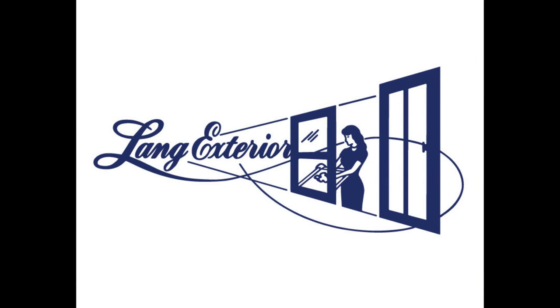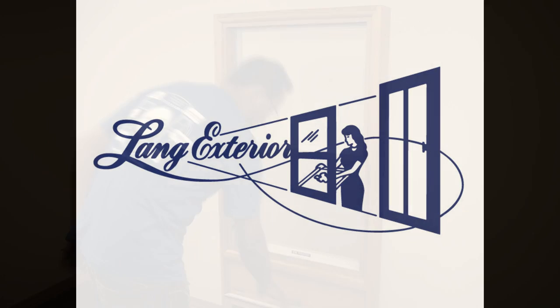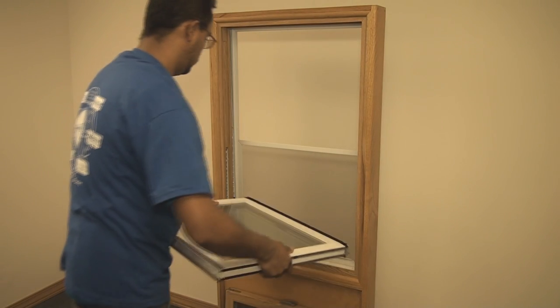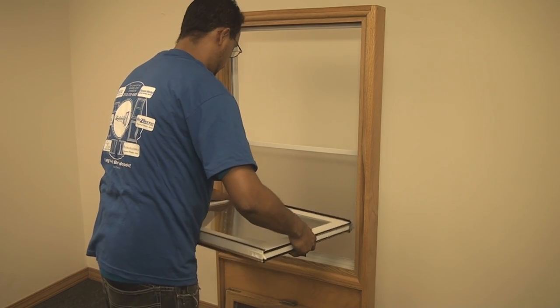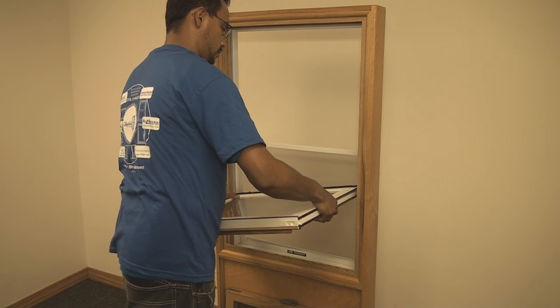Remember to make sure the amount of turns you do, because both sides need to be done the same amount of turns. Once you are done making adjustments, put the sash back into the window. Start by placing the peg on the left side in first, then the right side.